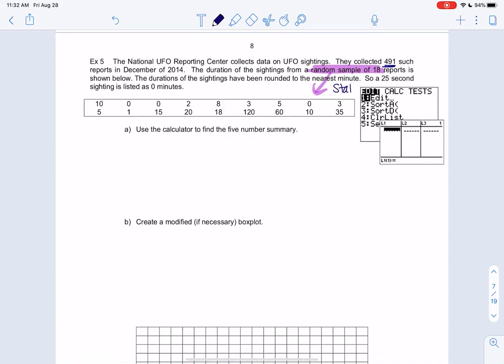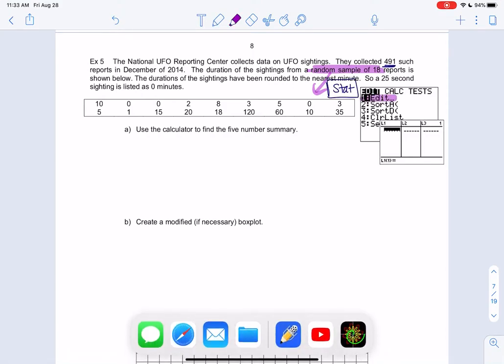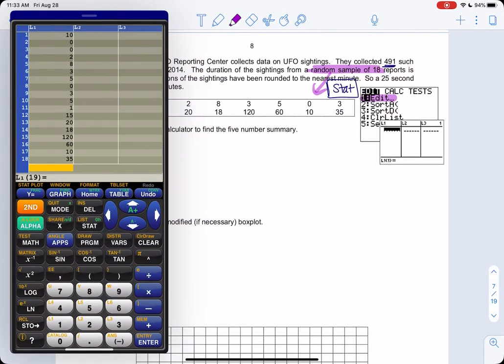You're going to hit stat and you'll go to our favorite menu, edit, and it'll bring you to the list. I already have all the data in L1 so go ahead and type the data and then come back to the video. If you have any data in here go to the top and hit clear enter. If it's blank just start typing. Type numbers, enter, number, enter.